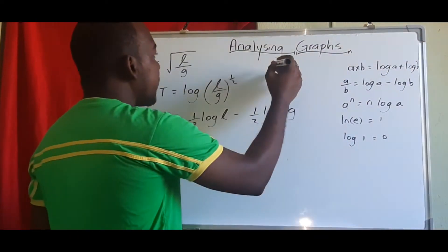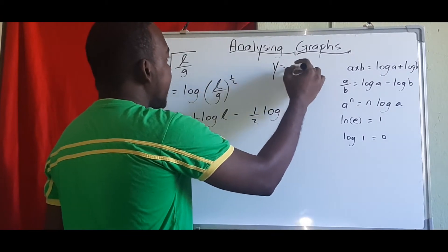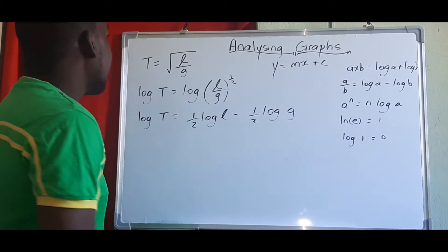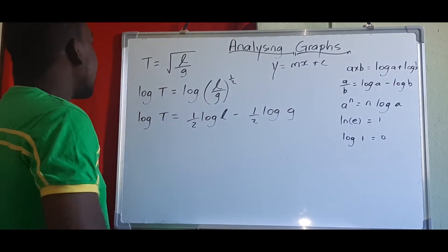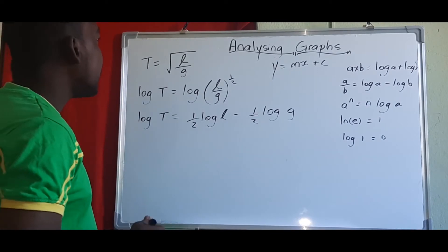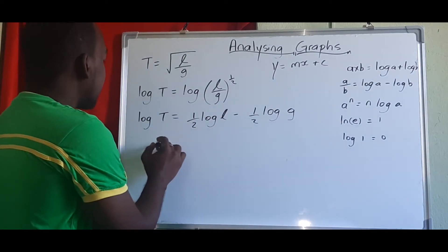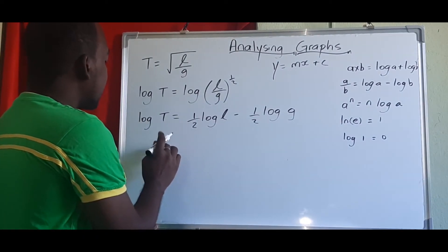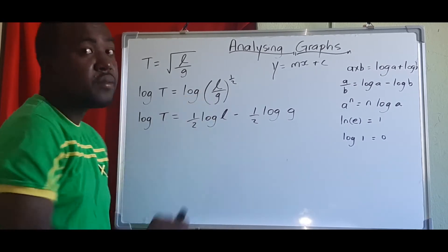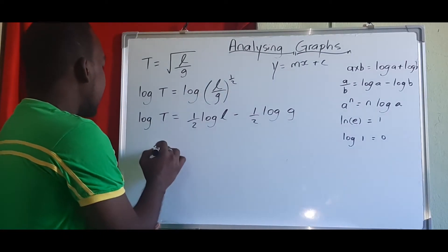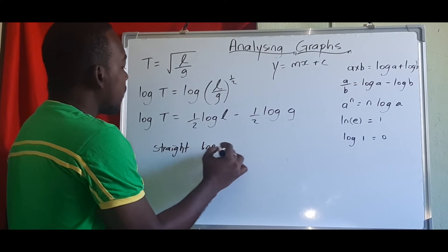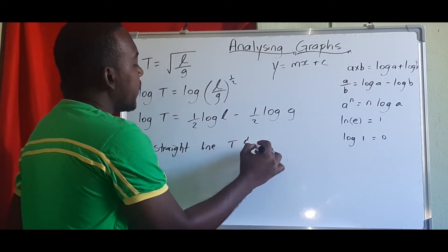So remember, straight line graph always mimics the y equals mx plus c. So let's look. So in this case, if we have t equals the square root of l over g and we need to plot a graph of t, so we need a straight line graph with t and l.